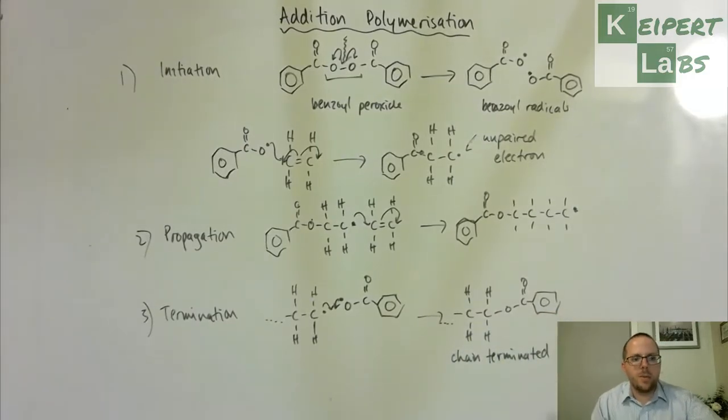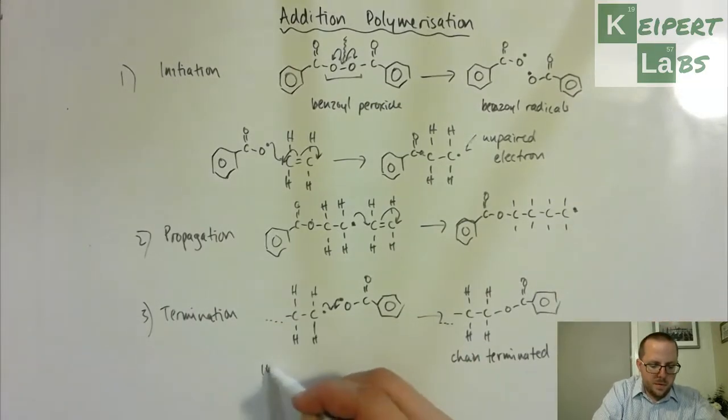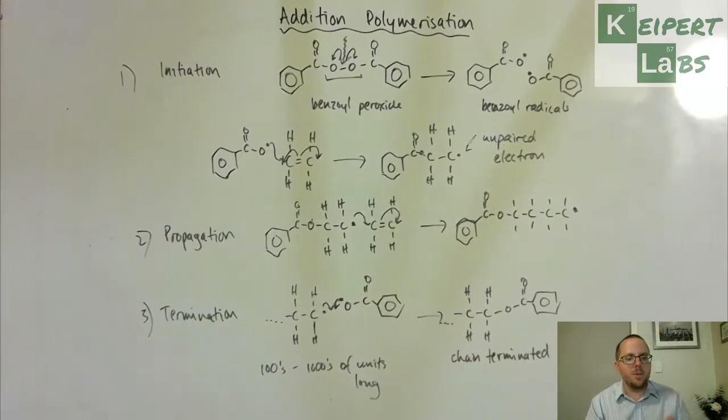So this chain is terminated, and so that then we've got many hundreds to thousands of units long. So depending on how much of the process has happened between start to finish, that gives us a very long alkane chain, so we would have a long chain of what we would call polyethylene but basically like a mega long alkane molecule.